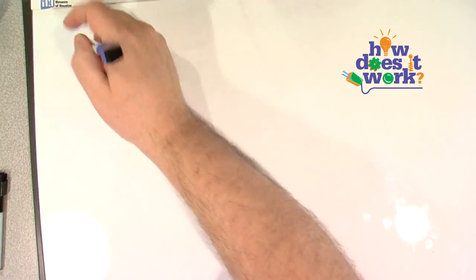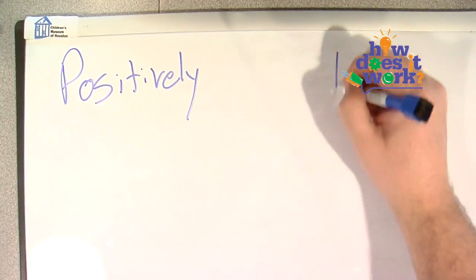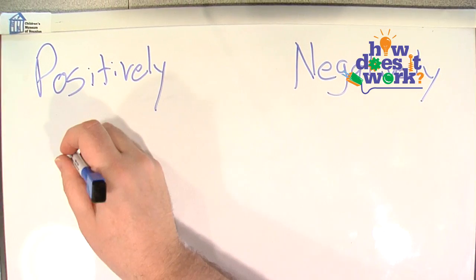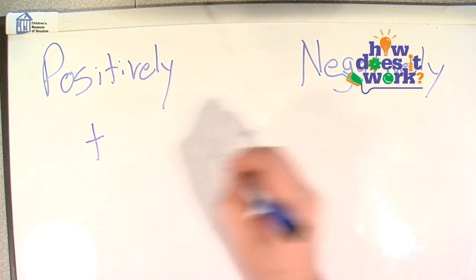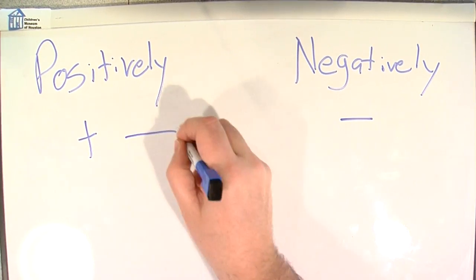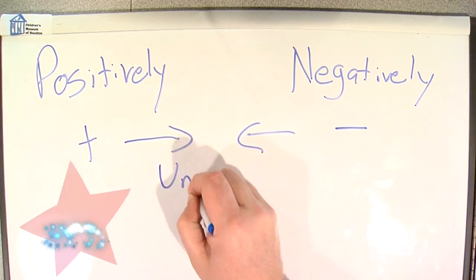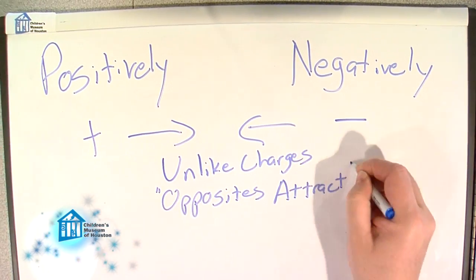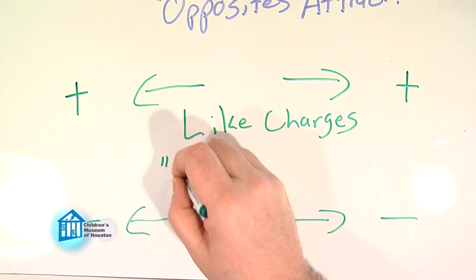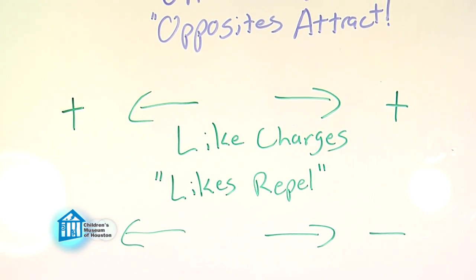Remember that when rubbed together, one of the substances becomes positively charged and the other becomes negatively charged. There's a basic rule in science when it comes to charges: opposites attract, likes repel. So when a positive and a negative charge come close together, they attract — basically, the electrons want to go back to the way they were. But when a positive and a positive, or a negative and a negative come close together, they repel, or push away from each other.